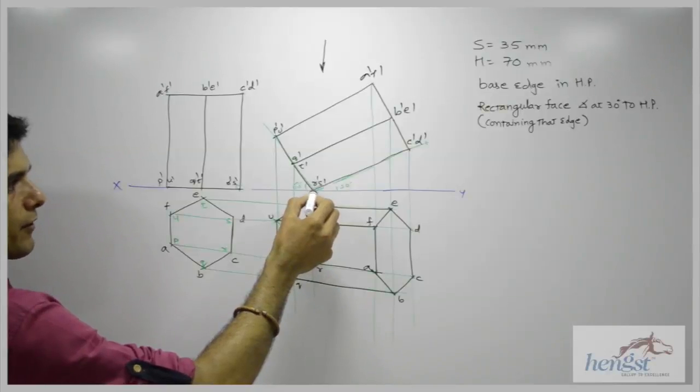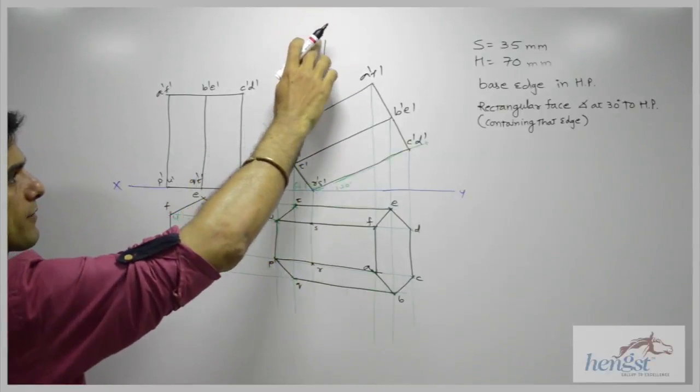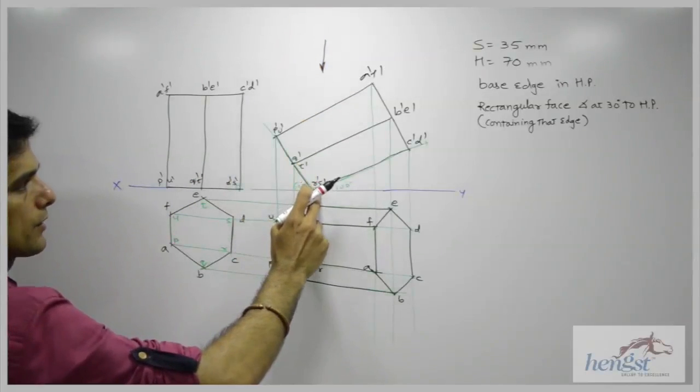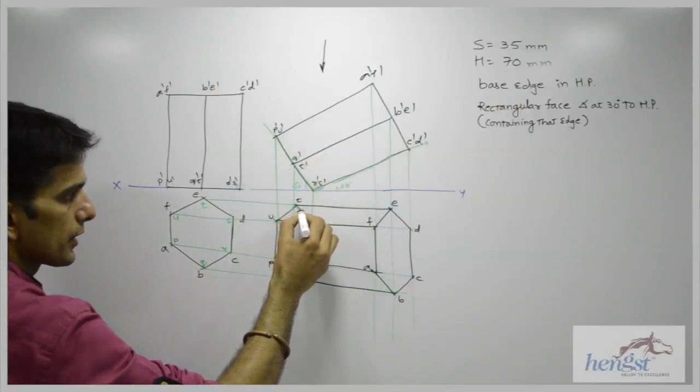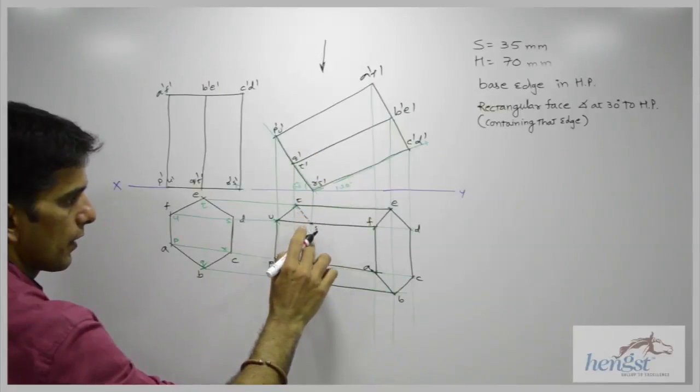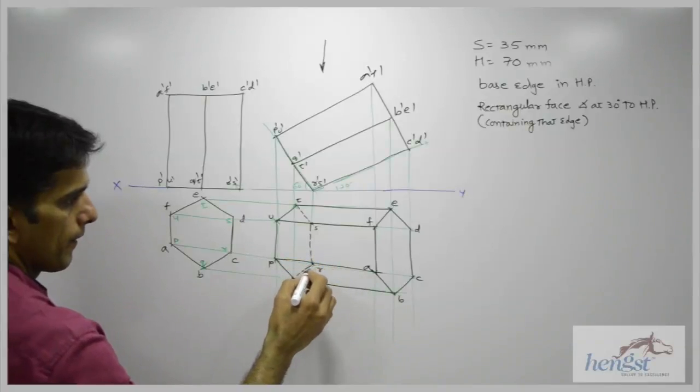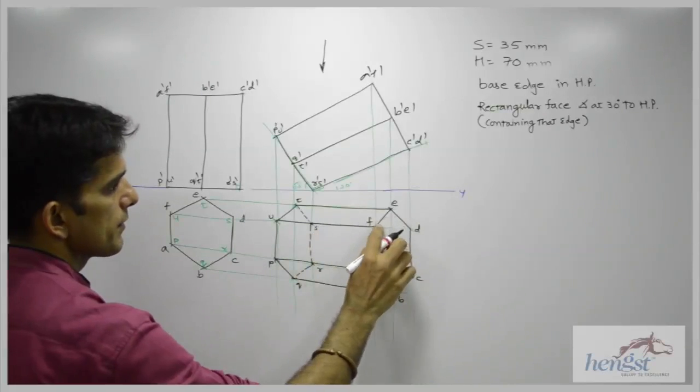Now this point is away from the observer. When the observer sees from the top, this is the lowest point which the observer can see. So those points will be dotted. So this will be dotted, and s to d will be dotted.